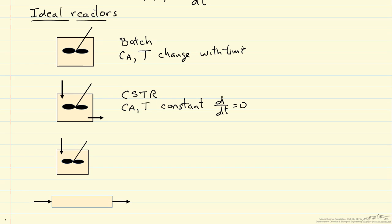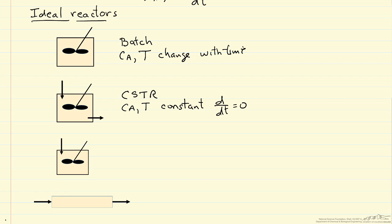A variation on batch reactor is a semi-batch reactor. This can take different forms. In this case, I've drawn it where, for example, we start with A in the reactor and then we add B. This means it's not at steady state. Therefore, like batch, both concentration and temperature can change with time.